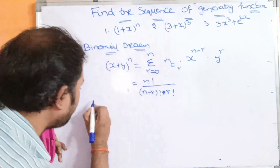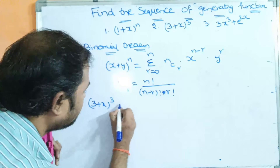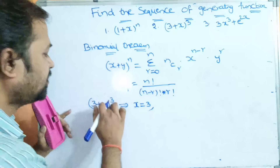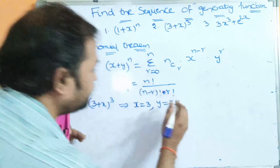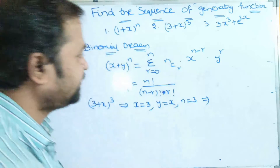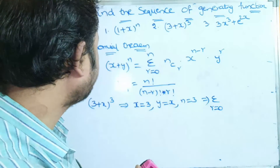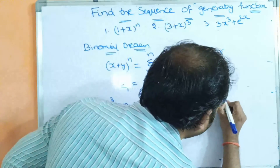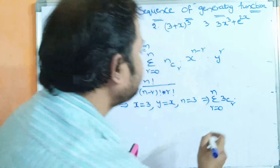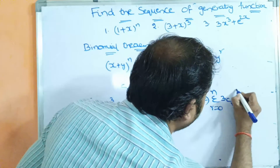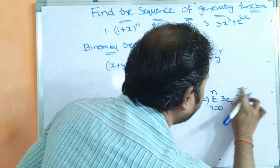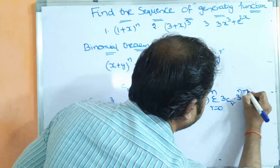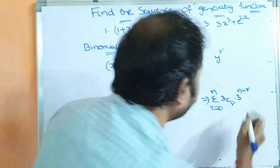Now let us solve the next problem: (3+x)^3. Comparing with (x+y)^n, the x value is 3, y value is x, and n value is 3. Writing the formula: sigma r=0 to 3 of 3Cr · 3^(3−r) · x^r.